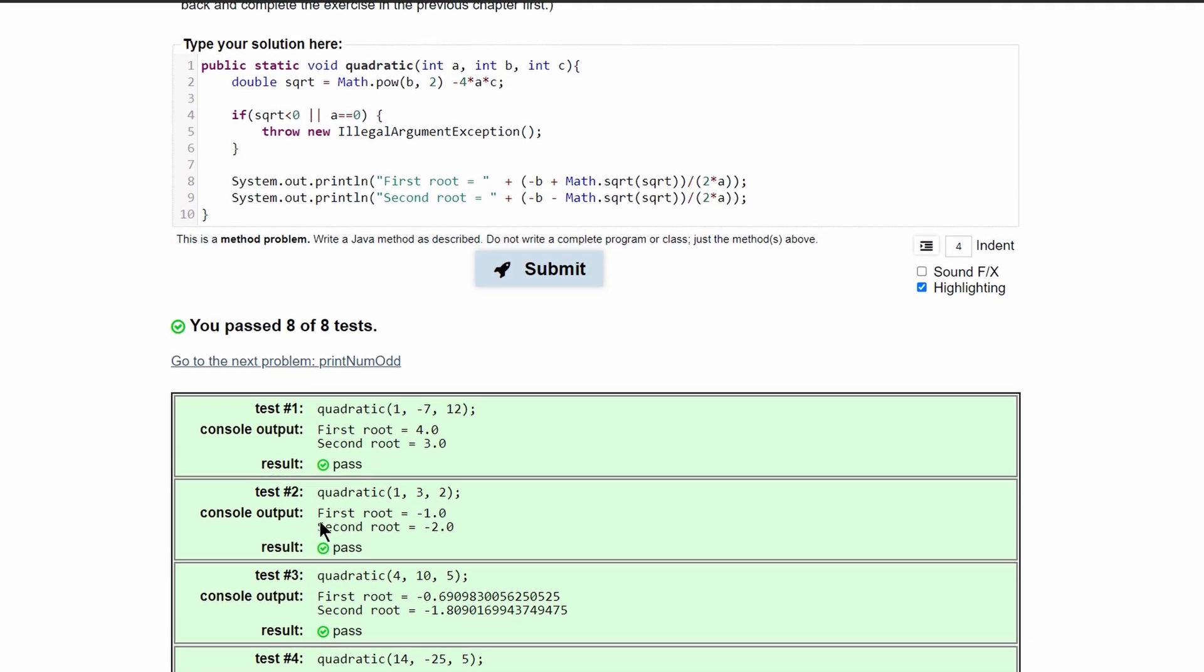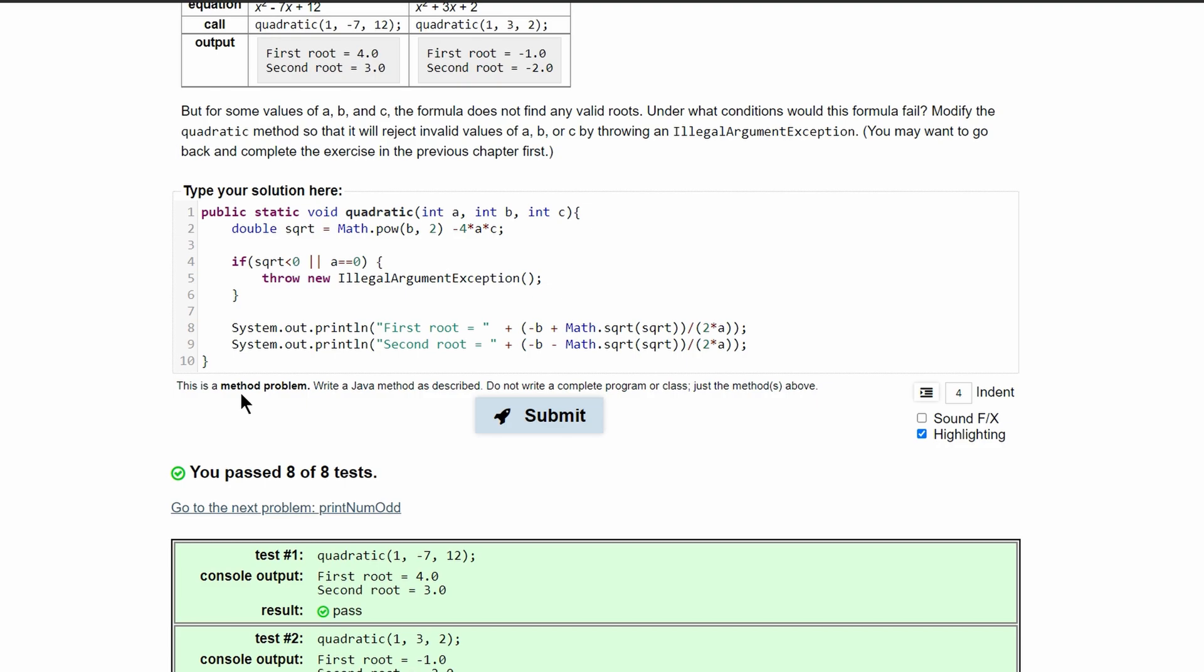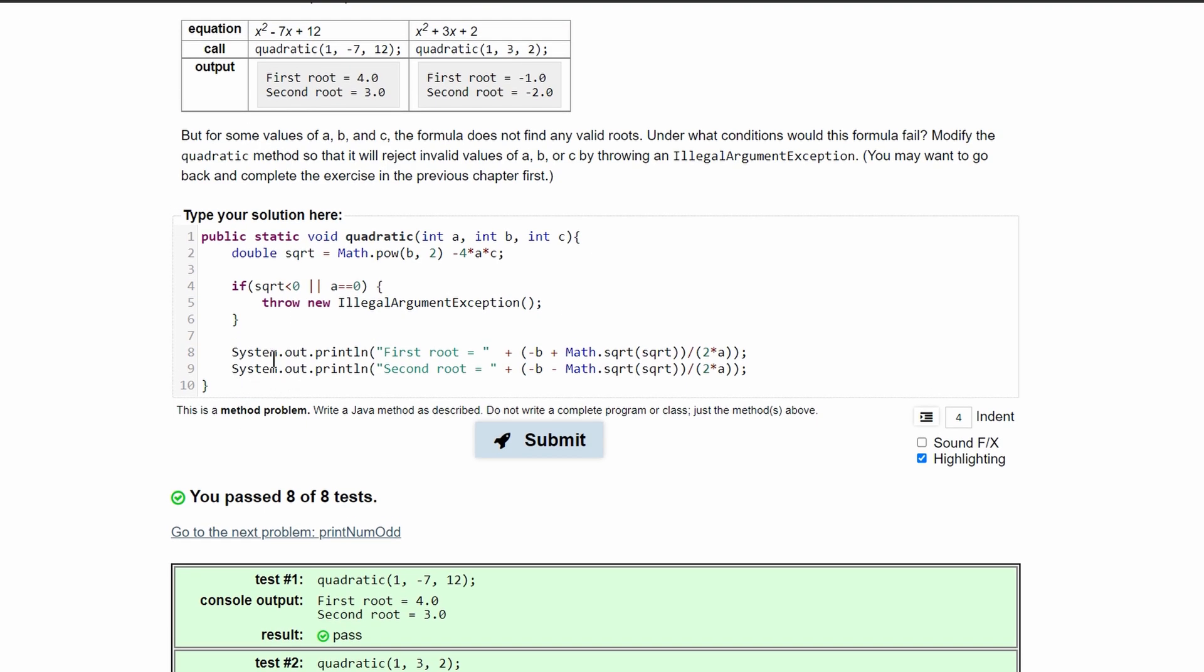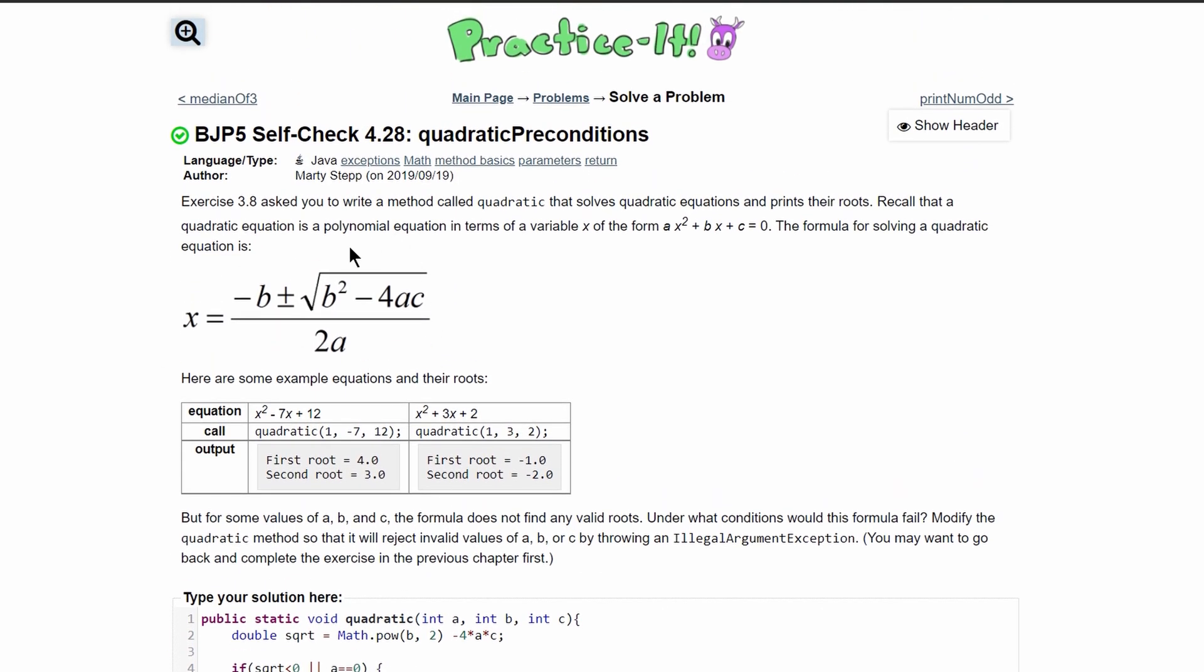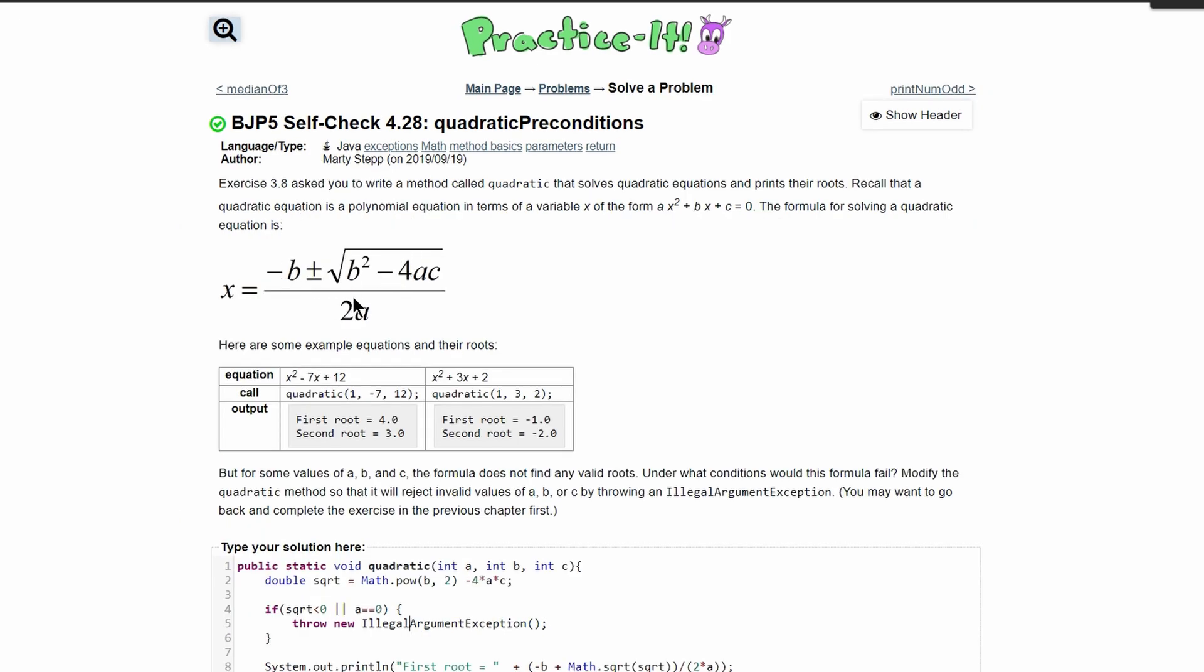If we submit this again, we can see that we have passed the test. This is just a super clean, easy way to make sure this code works by checking it and also having our output being in one line. So that's the new code for this practice it self-check 4.28 quadratic preconditions.